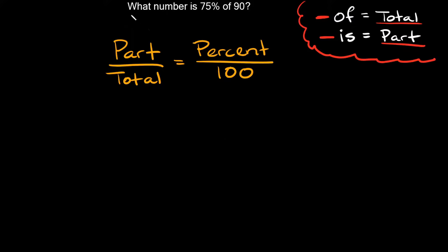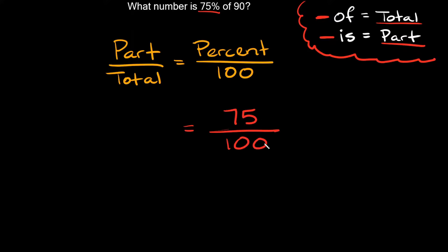So let's try this first example: 'What number is 75 percent of 90?' Let's fill out our formula with some information that we know. The easy one to always identify is the one with the percentage sign — whichever number has the percentage sign goes in the percent spot. So that's going to be 75 over 100. Now we just have to figure out the part and the total.